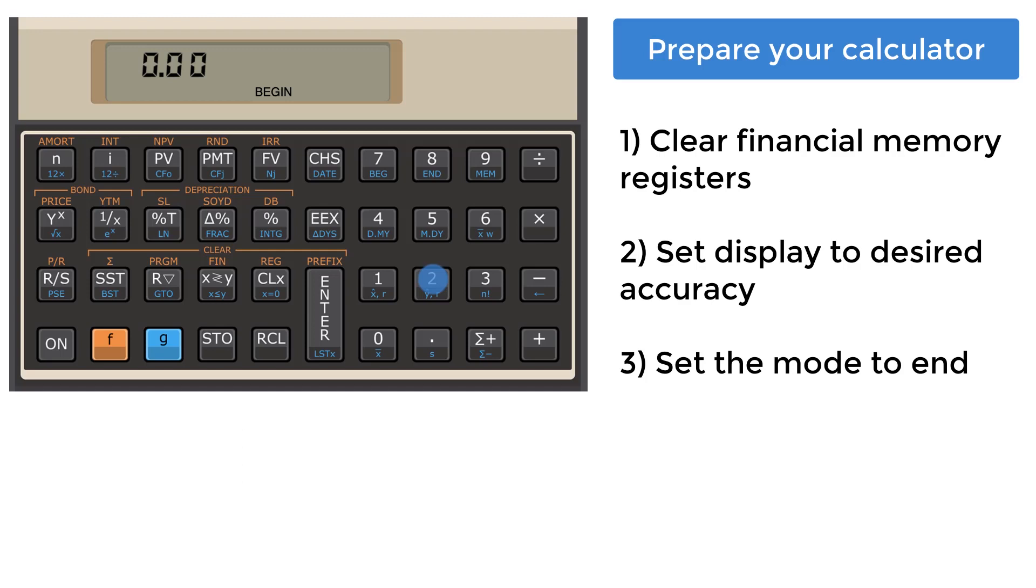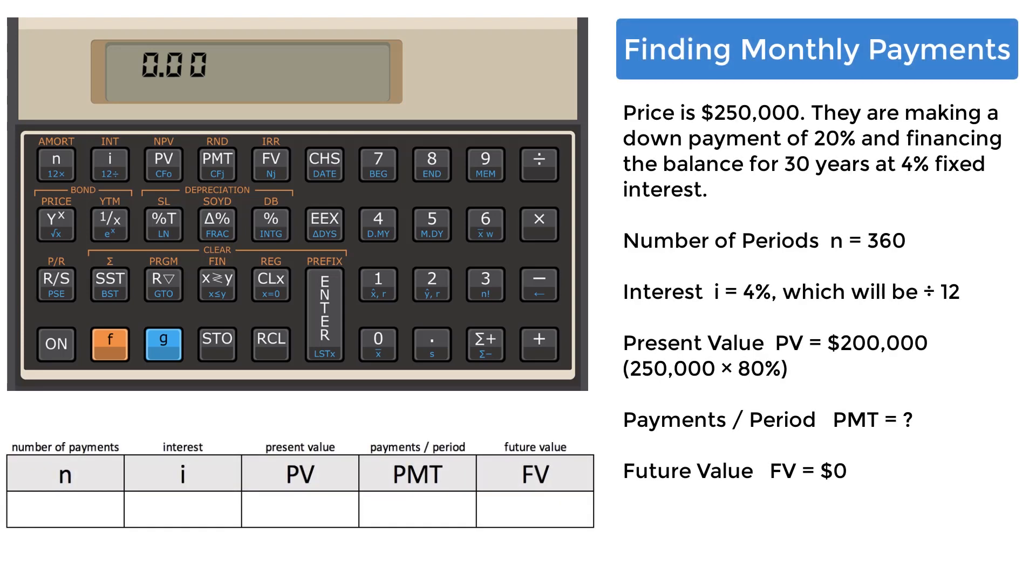For calculations that involve amortization, make sure your calculator's mode is set to end instead of begin. On the HP-12C, the display will be blank to indicate end mode and the word begin if it's in begin mode. Starting with finding the monthly mortgage payment, you will use the Time Value Money financial registers. It is stated that they will pay 20% of the purchase price, so making the total down payment will leave 80% of the purchase price. Begin with finding that amount.